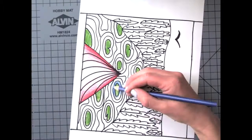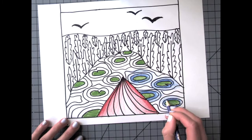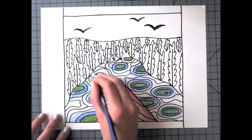When you're adding value or shading, sometimes it can be helpful to turn the page like you saw I just did to get a better angle for your hand. It makes it a little bit easier.